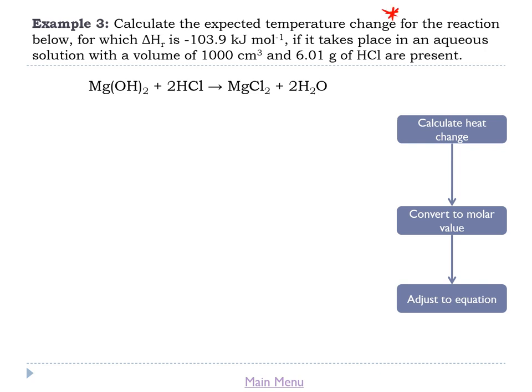Example three: calculate the expected temperature change for the reaction below for which ΔHᴿ is −103.9 kJ/mol, if it takes place in 1000 cm³ of aqueous solution with 6.01 grams of HCl present. As you've probably spotted, we're given ΔHᴿ and we're going to work backwards to find what the expected temperature change would be. We use the same strategy, but in reverse: adjust for the equation stoichiometry, convert from molar value, then use that to calculate temperature change.